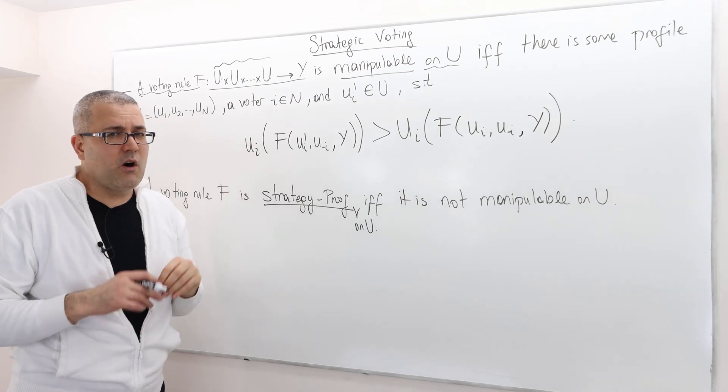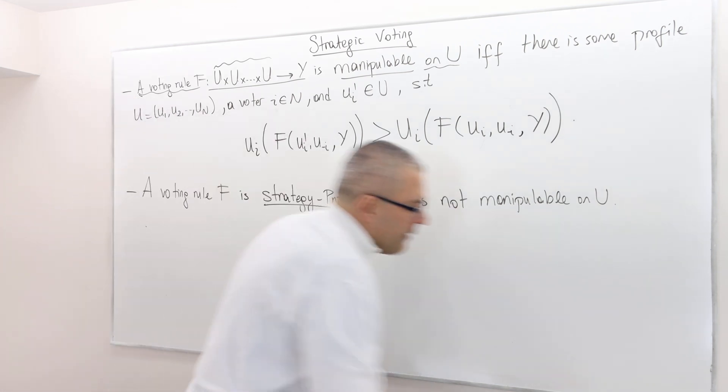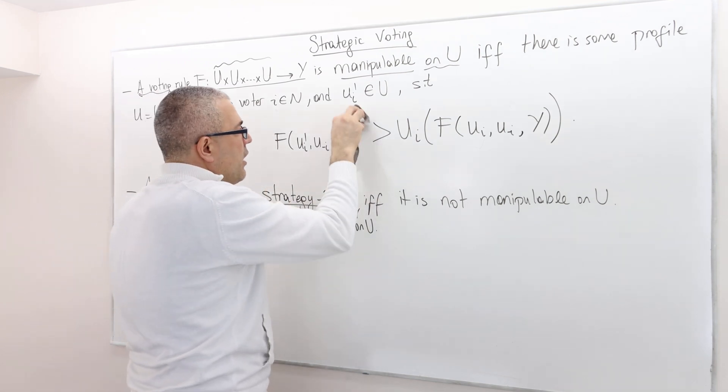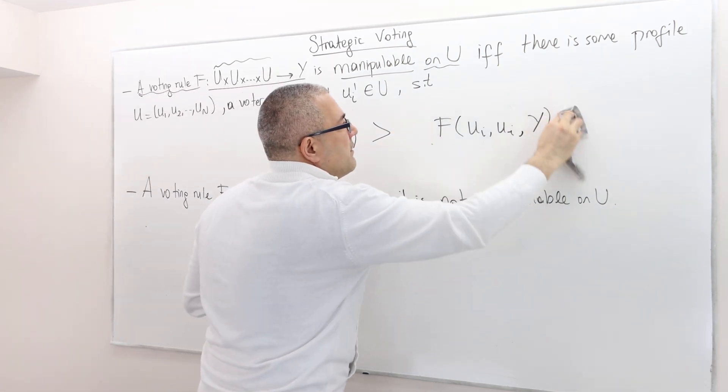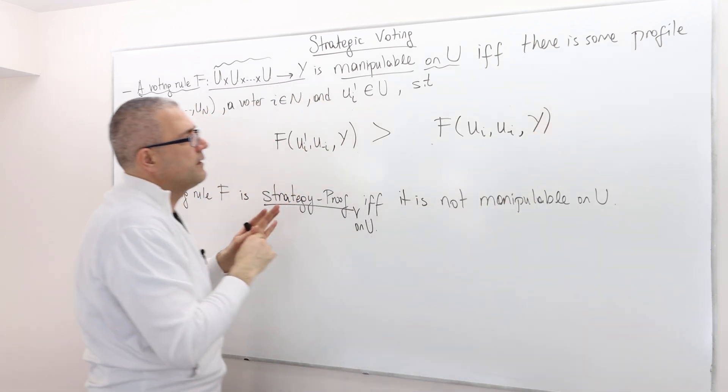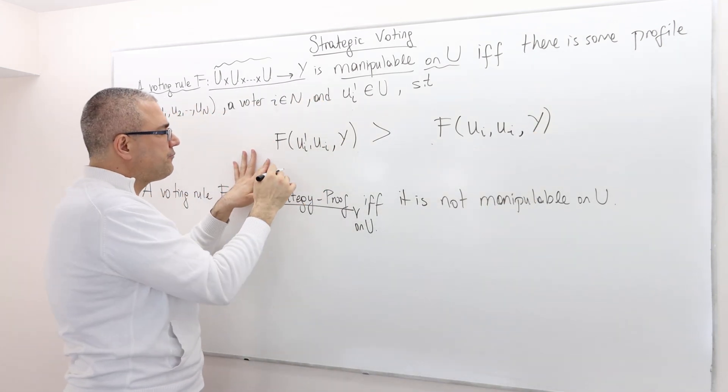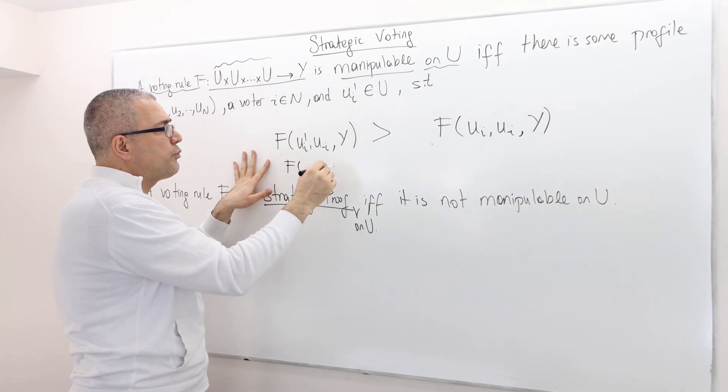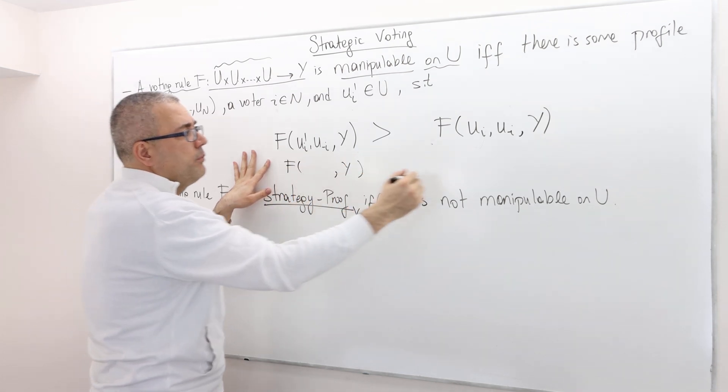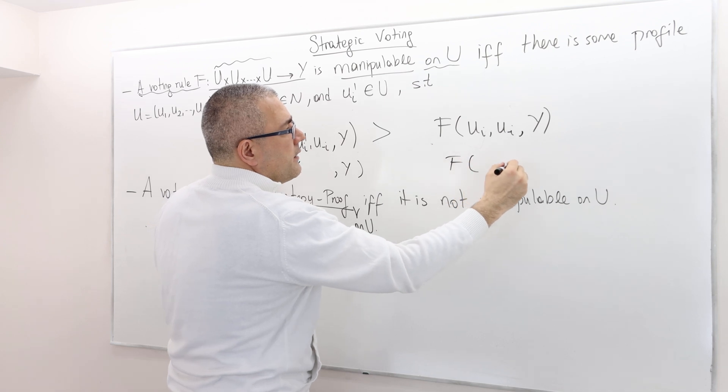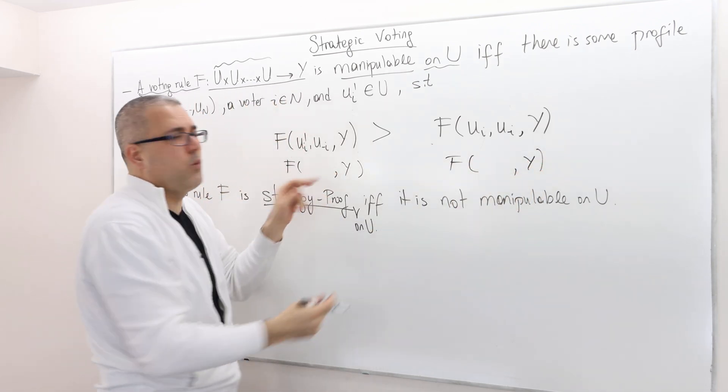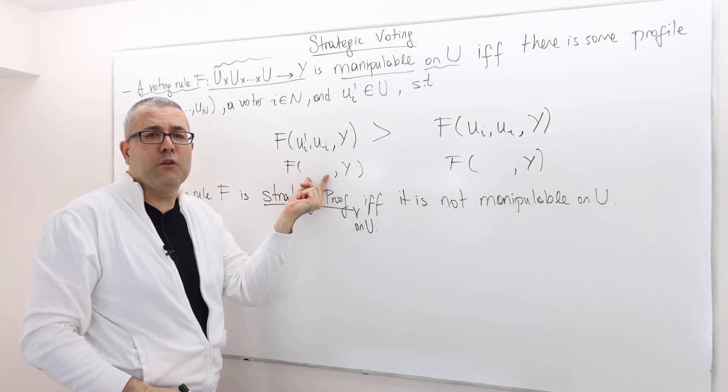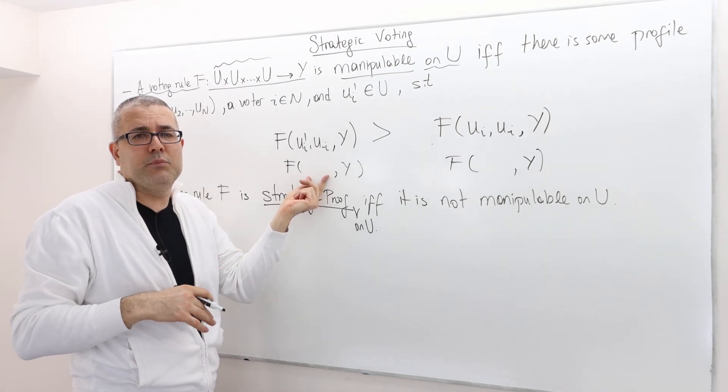Understanding this inequality is key. What does it say? Let me ignore this because I know it makes things complicated. So on the left hand side here, I have the rule F is applied to preference. Well, both rules are applied on, by the way, the same set of alternatives.